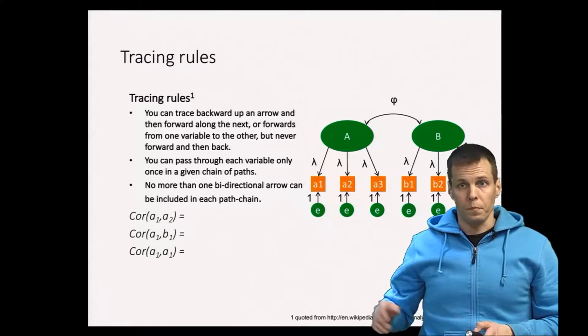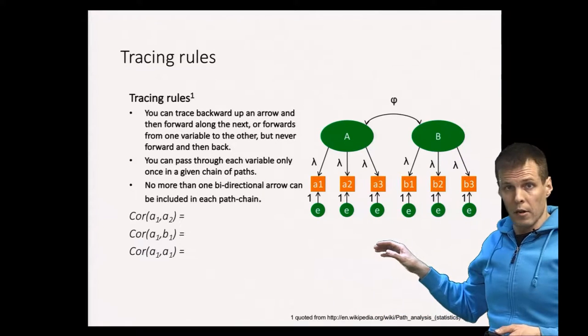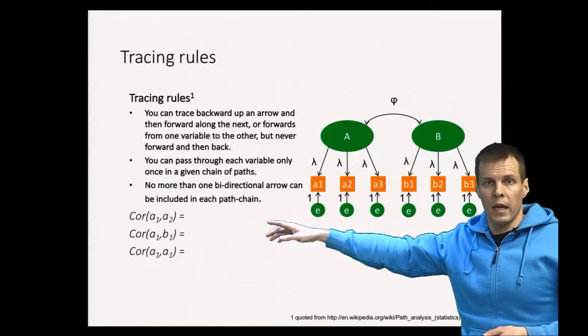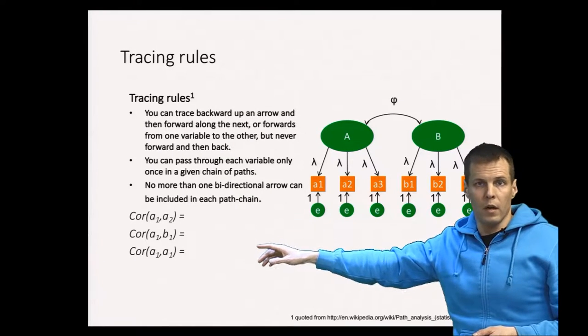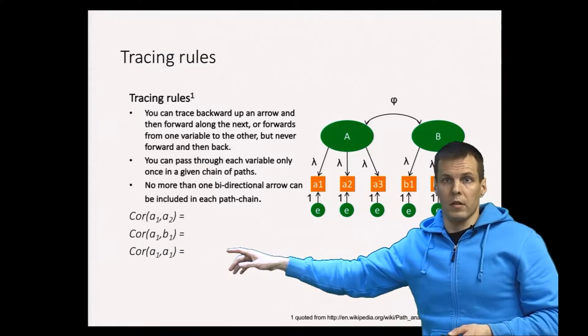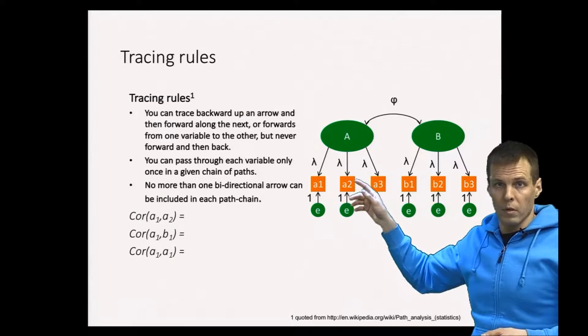We have a factor model here, and we can specify that the correlations between a1 and a2, a1 and b1, and a1 with itself, which is the variance, are functions of these model parameters.